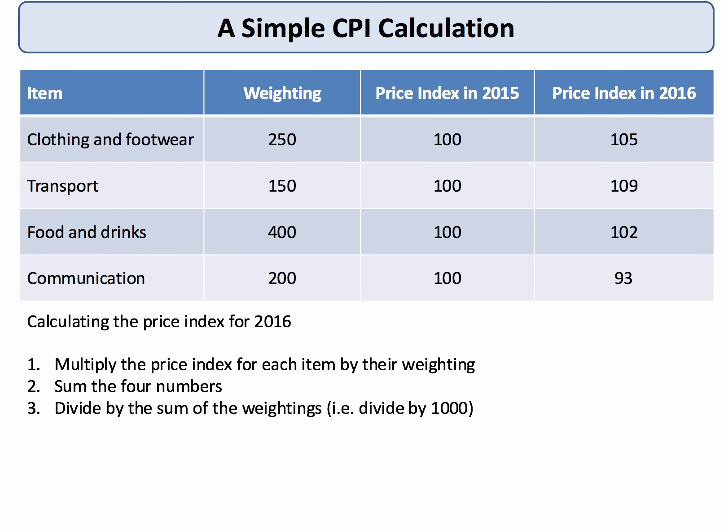To calculate the CPI for 2016, you multiply the price index for each item by its weighting, because the weighting reflects the relative importance of that item. So for example: clothing and footwear — 250 multiplied by 105; transport — 150 multiplied by 109. You multiply each item's price index by its weighting, giving four numbers, then add those together and divide by the sum of the weightings. In this case the weightings — 250, 150, 400 and 200 — sum to a thousand.